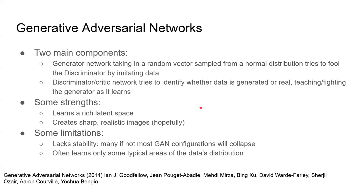There are some strengths of generative adversarial networks when trying to generate images, compounds, or anything like that. One is that they learn a rich latent space. Even if it's unconditional — only seeing images of faces — it can learn properties of faces that are really interesting and useful. And if it successfully trains, which is the big if, then it creates sharp, realistic images. GANs are super unstable and very hard to train — most configurations will totally collapse and not produce good images. But when it works, it works quite well.